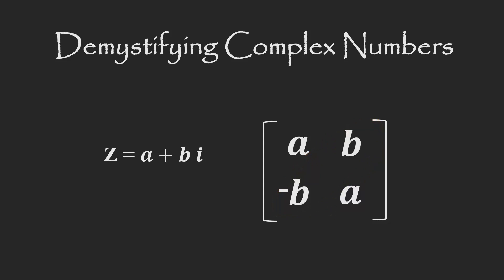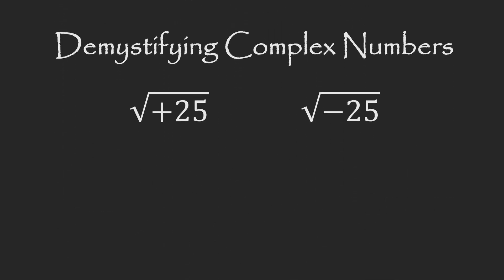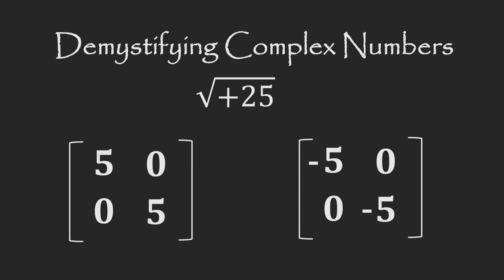To see how this works, let's start with an example. Let's say we want to take the square root of positive 25 and the square root of negative 25. In the two-by-two matrix version of complex numbers, the square root of positive 25 has two matrix solutions: one with positive 5s on the forward diagonal and one with negative 5s on the forward diagonal.